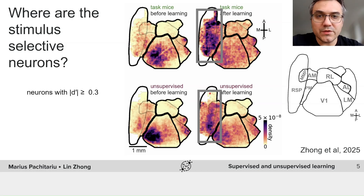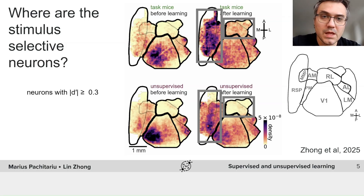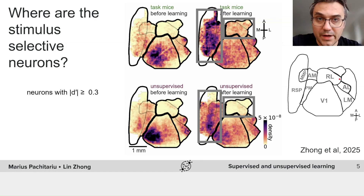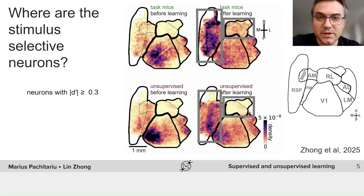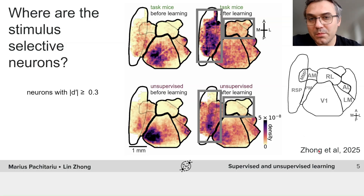The same medial regions also become more activated in the unsupervised animals after learning — the animals that did not have to do any tasks. On the other hand, if you look carefully, you'll find a region in the anterior area RL where there are more selective neurons in the task mice but not so much in the unsupervised mice. These and many other analyses are in Zong et al., and they can form the basis or inspiration for your project.